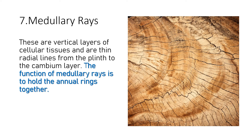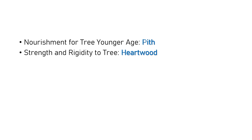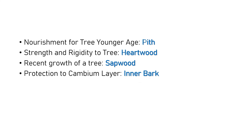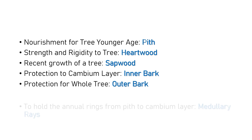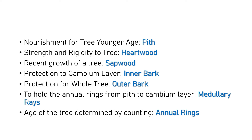Let's revise each component and their responsibilities quickly. Pith is responsible for nourishment in the younger stage. Heartwood is responsible for providing strength to the wood. Sapwood or alburnum is responsible for the recent growth of the tree. Inner bark protects the cambium layer. Outer bark protects the whole structure of timber. Medullary rays hold the annual rings together from pith to cambium layer. We calculate the age of the timber by counting the annular rings.